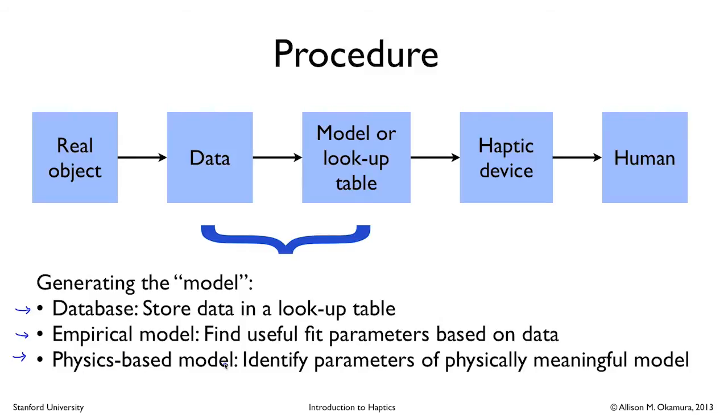A physics-based model, on the other hand, means that you do understand something about the underlying physics of the situation. And so you usually start a priori with a physically meaningful model. And then when you fit the data, you identify the parameters of that model. And this would be the ideal, both for educational purposes in this class, because we would like to be understanding something about real physics, but also because having physically meaningful models can be useful for optimizing your simulation or understanding why it feels the way it does. So ideally, you would have a physics-based model. But if it's not possible, you could have an empirical model. And if even that's too difficult, you could go down to a database model.